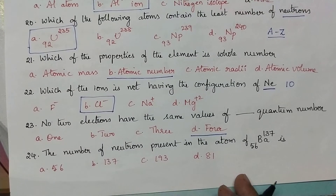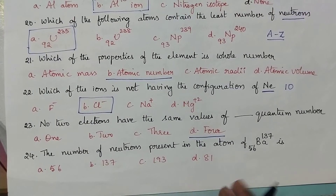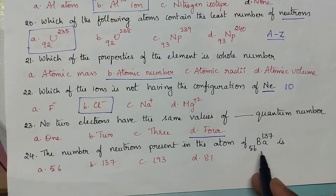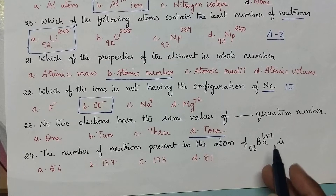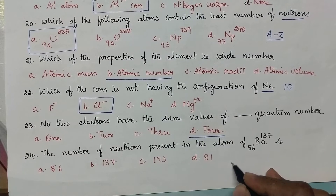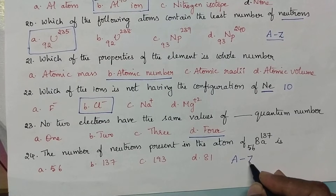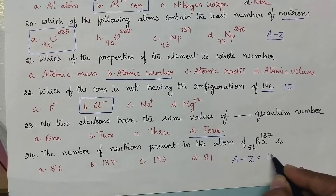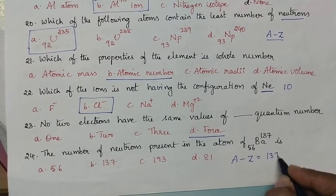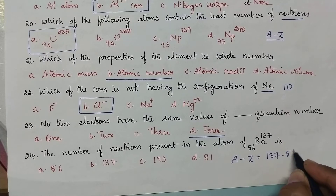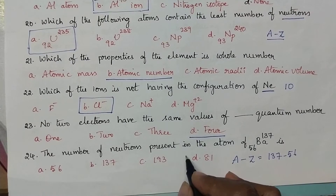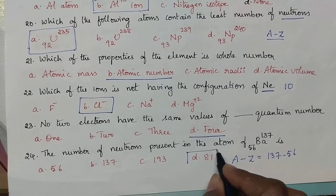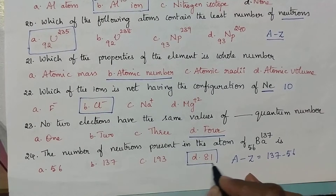The number of neutrons present in the atom of barium-137: here again we have to calculate A minus Z value, that is 137 minus 56. So option D is the right answer.